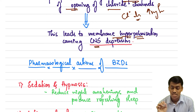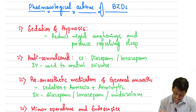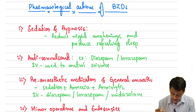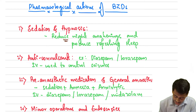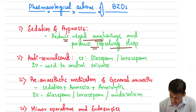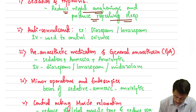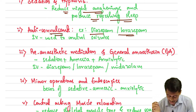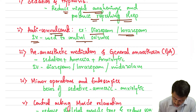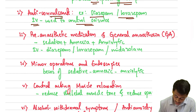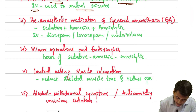Now let's look at the pharmacological actions of the benzodiazepines. Firstly, we have sedation and hypnosis — they reduce night awakenings and help in producing refreshing sleep. They are also used as anticonvulsants; diazepam and lorazepam are commonly used IV in hospitals to control seizures, status epilepticus, or generalized tonic-clonic seizures.